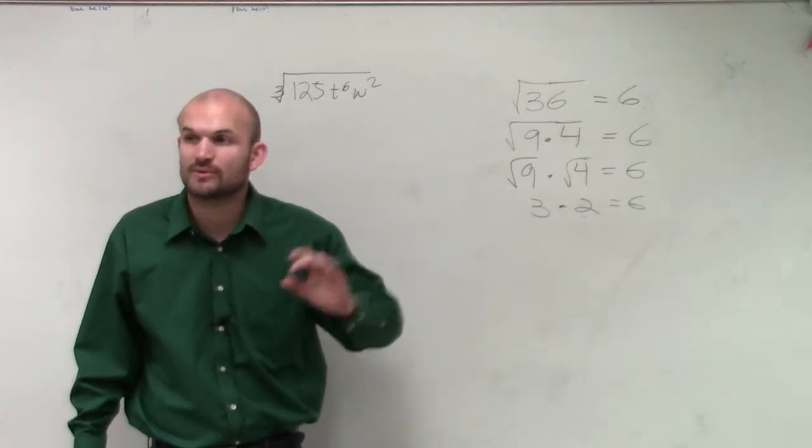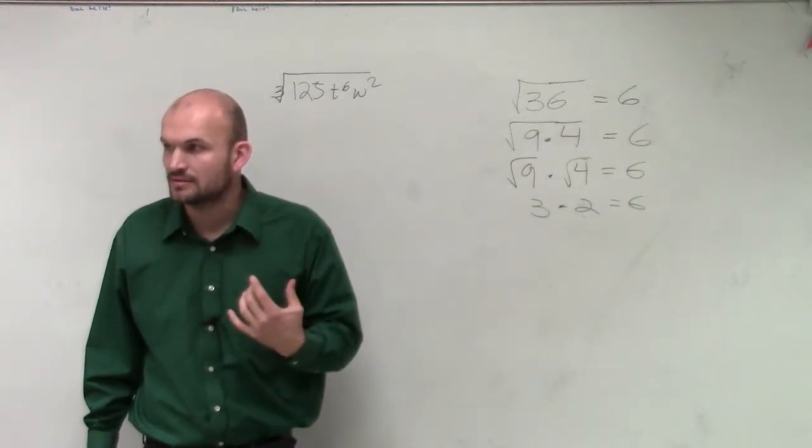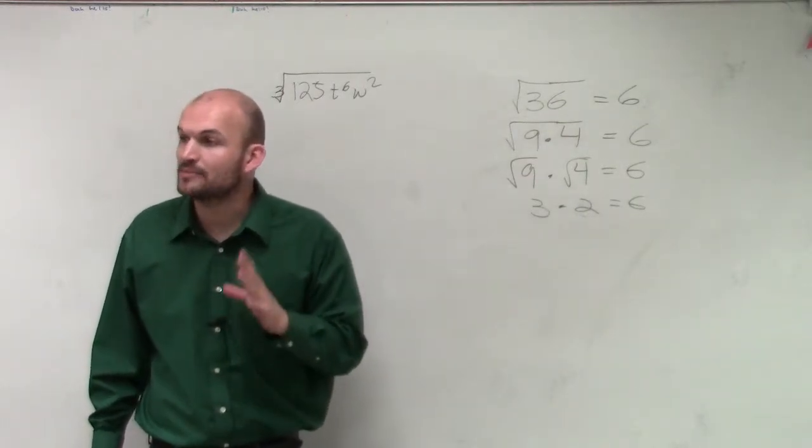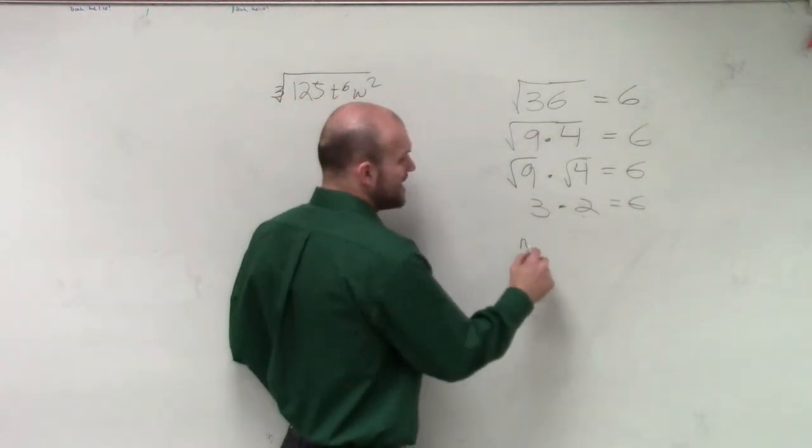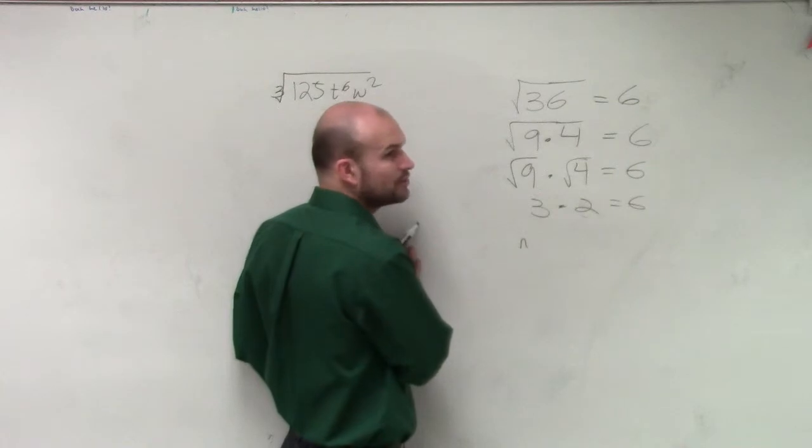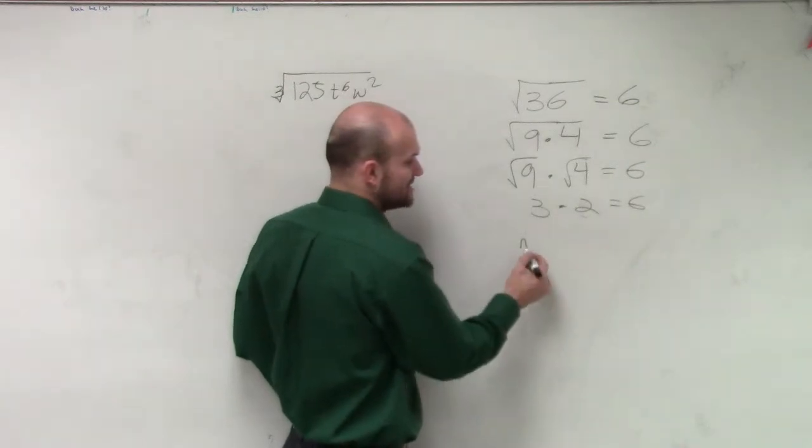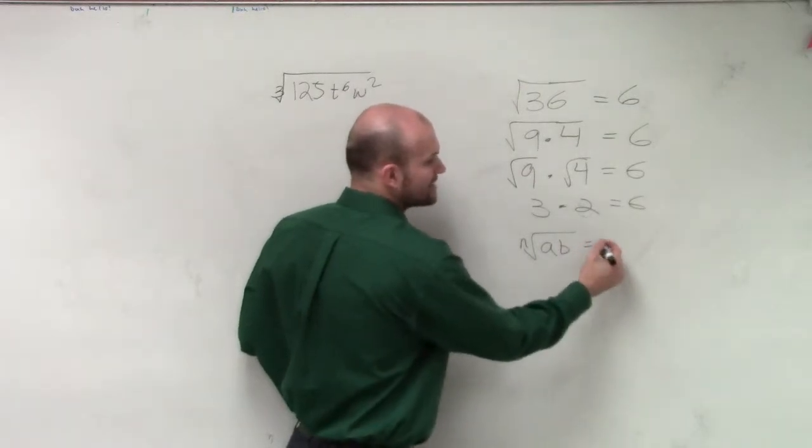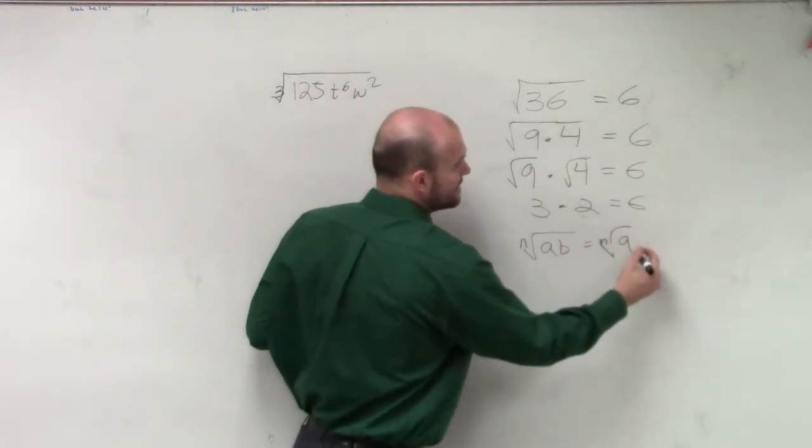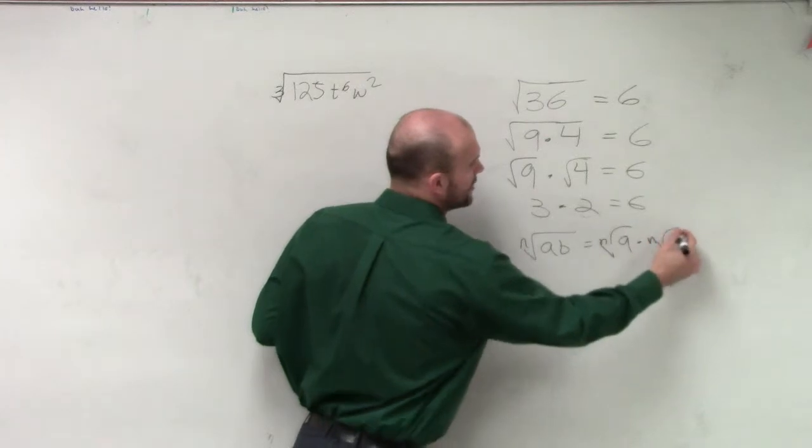Now, what I want you guys to understand is what we call the product property of radicals. What the product property of radicals states is it doesn't matter if I'm taking the square root, cube root, or whatever root. If I take the root of two terms multiplied, I can rewrite it as the root of a times the root of b.